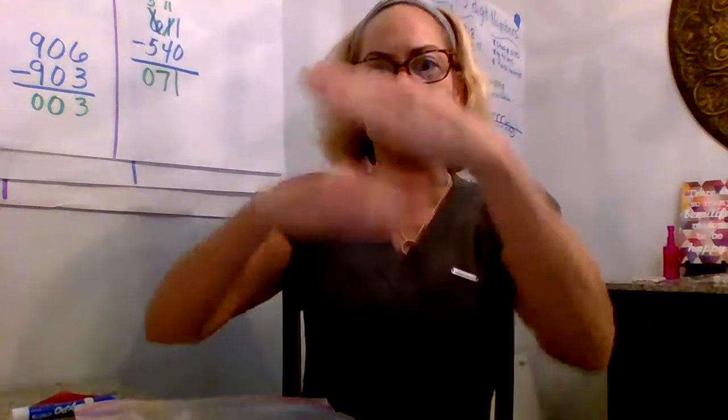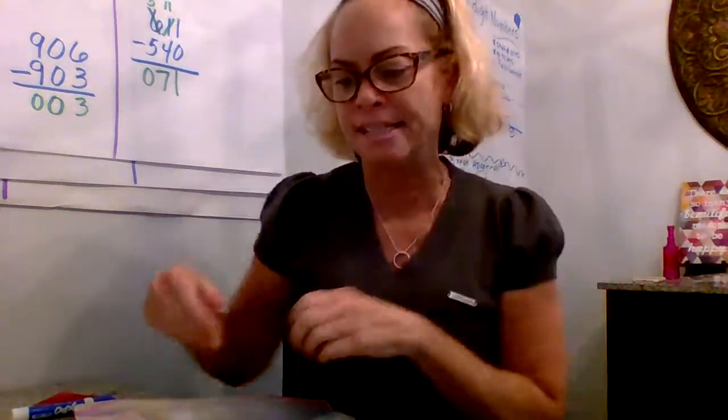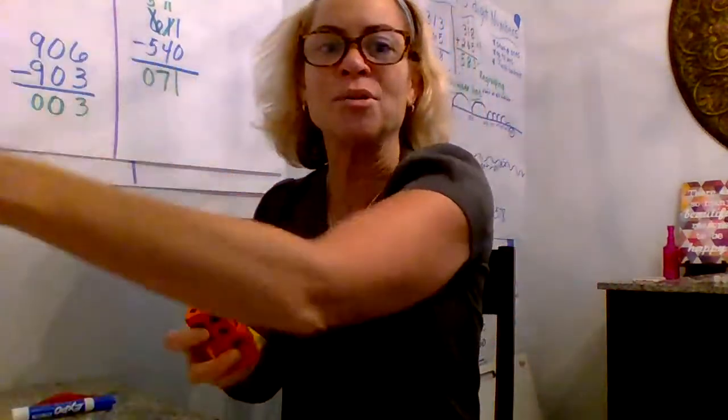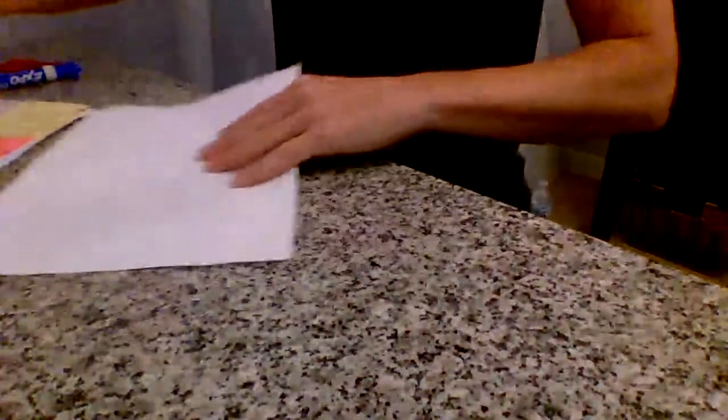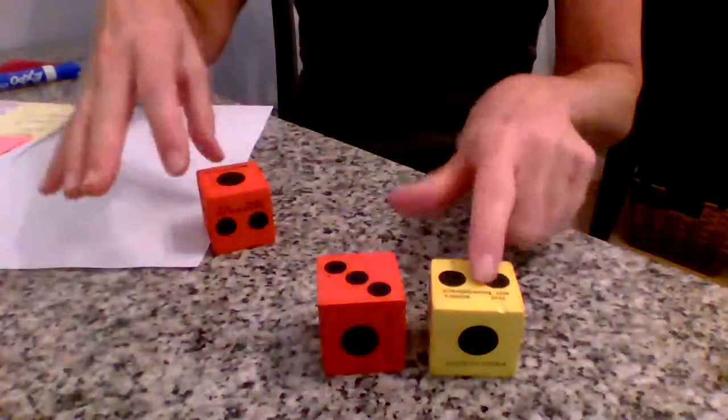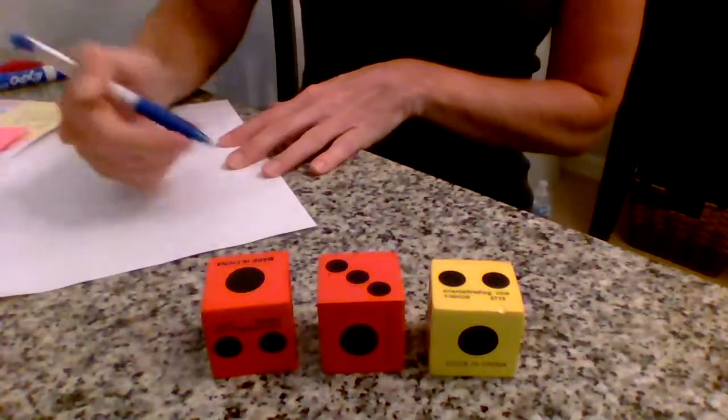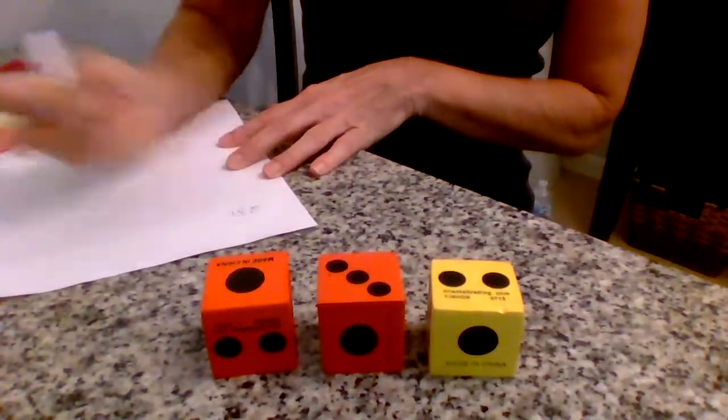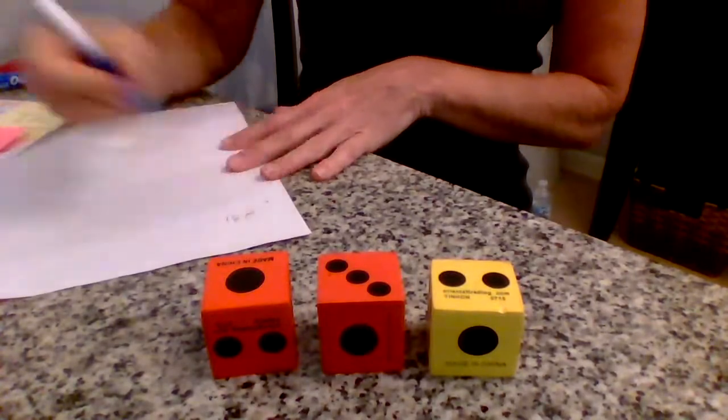The adding is easy because you can switch your addends and you're still going to get the same number. So what you can do is roll your dice. I've got a 2, a 3, and a 1. Two hundred thirty-one. I write it down, plus, and it's two hundred forty-three.